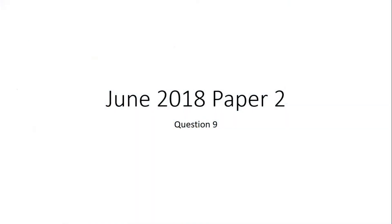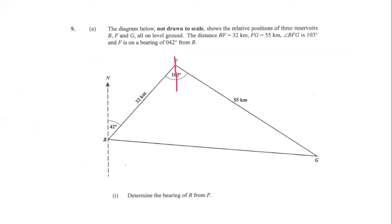Welcome back. We'll be working question nine from the June 2018 Mathematics Paper Two. The diagram shows the relative positions of three reservoirs B, F, and G, all on level ground. The distance BF is equal to 32 kilometers, FG is equal to 55 kilometers, angle BFG is equal to 103 degrees, and F is on a bearing of 42 degrees from B.